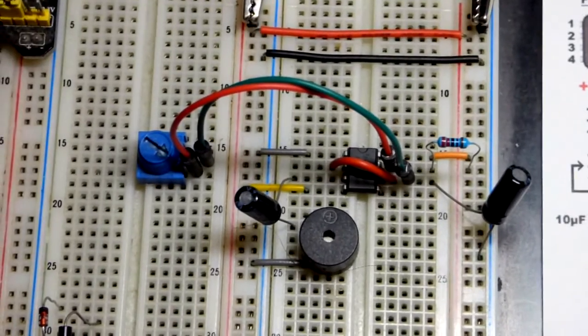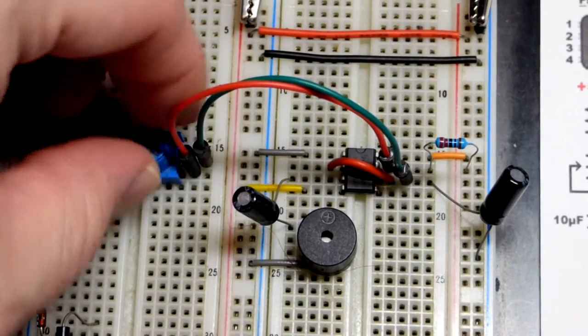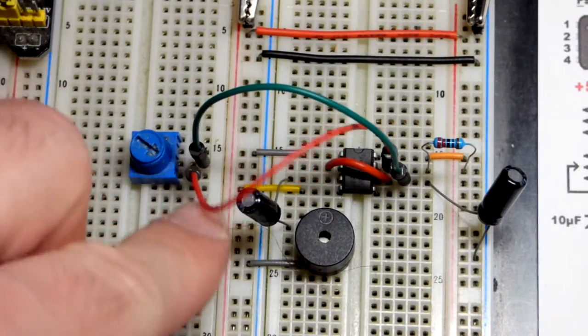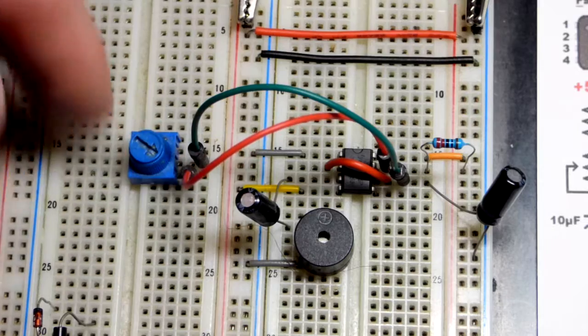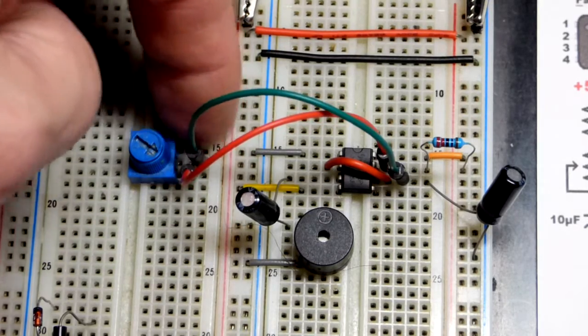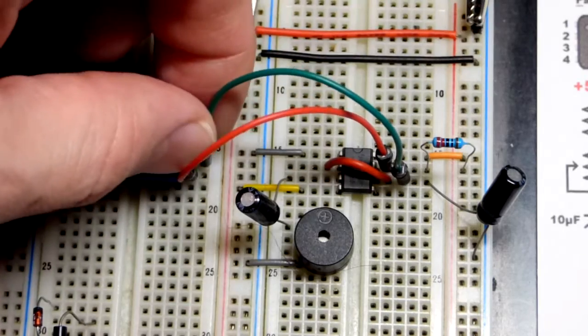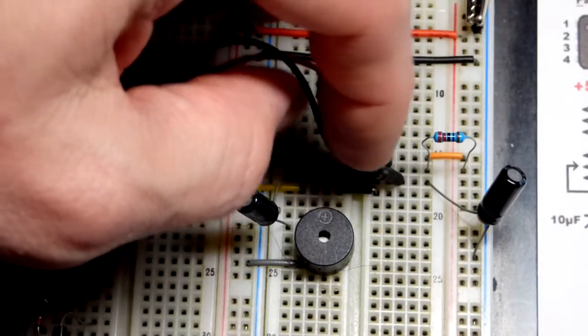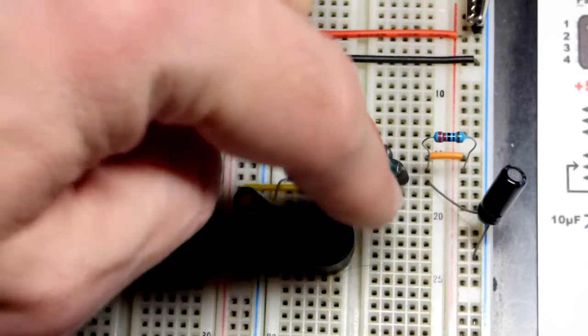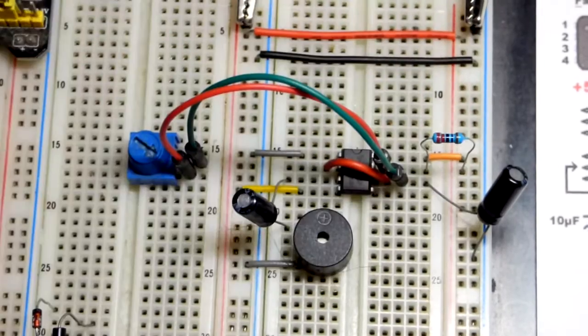Now we have the trim pot over here, the physical component. Here's one end of the wiper, pin 7 as we saw before. There's the other end of the wiper. And then we have the jumper going from the trim pot to the capacitor there, and also pin 6 which is tied to pin 2 which monitors the voltage of the capacitor.